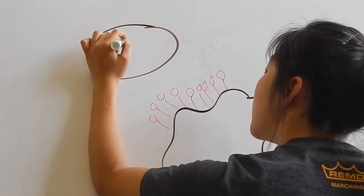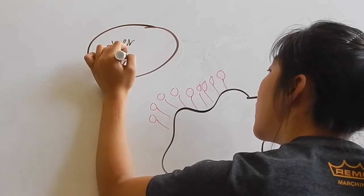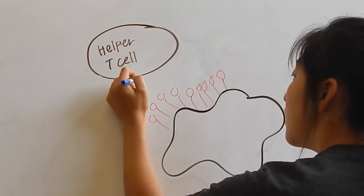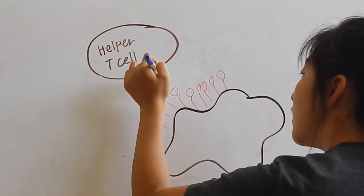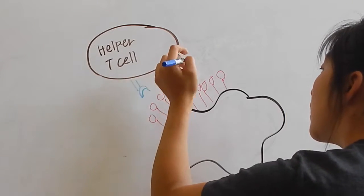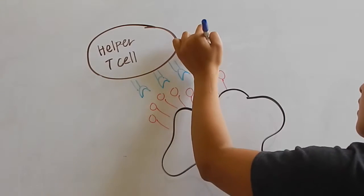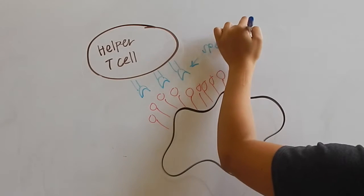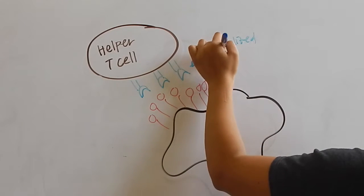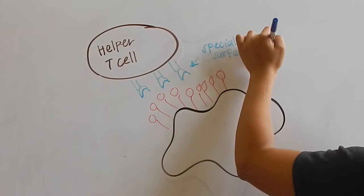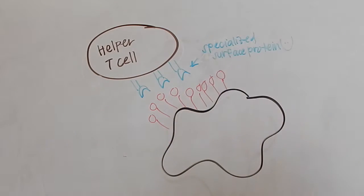The helper T cell with the corresponding surface protein will bind to the antigen-presenting cell. The antigen-presenting cell will release a cytokine called interleukin-1, which stimulates the helper T cell to release interleukin-2.